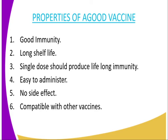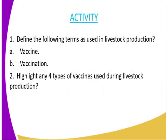The fourth property is that it should be easy to administer — it should not be complicated when it comes to introducing the vaccine into the body. It should have no side effects on the animal or on the farmer who is administering it. A good vaccine should also be compatible with other types of vaccine. We have come to the end of today's lesson.